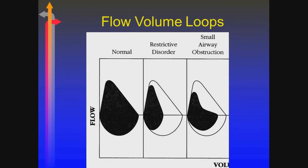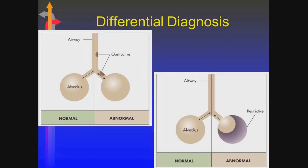Flow volume loops — a normal one has normal flow rates. With restrictive disease, the slope of the expiratory curve is pretty much the same, but you'd just have a reduction in lung volumes. With obstructed airway disease, you end up having that scooping-out pattern. Those middle to small sized airways are where the flow limitations occur. Obstructive diseases are airway related. Restrictive diseases are either lung parenchyma or chest wall related — inability to get air in with a restrictive.